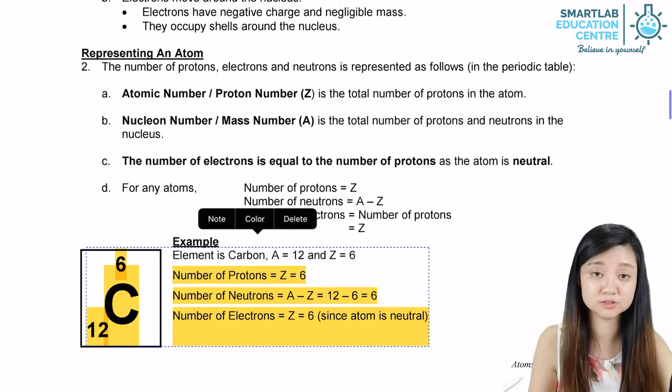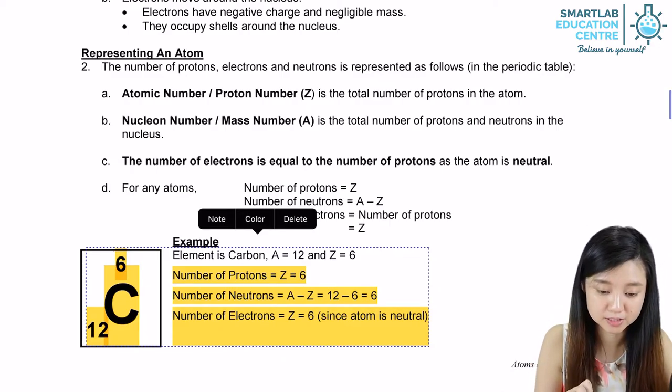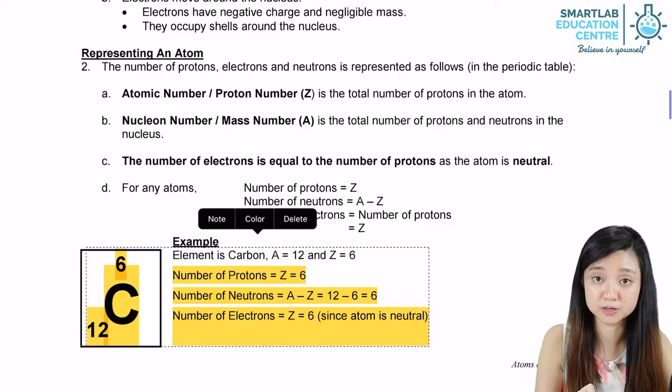When we represent an atom, you notice that all the elements are represented this way. There's a small number on top and a big number below.